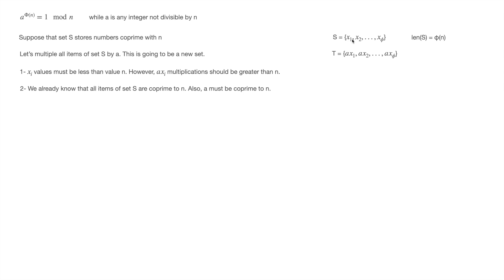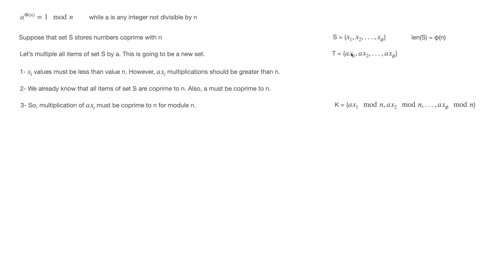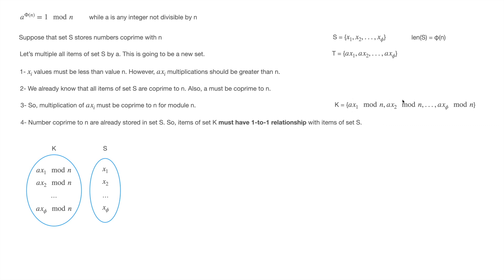The x values in set S are less than n since we stored positive integers up to n there, but a times x values might be greater than n. We already know all items in set S are co-prime to n, and a must also be co-prime to n by definition of Euler's theorem. So if I find the mod n value for each a·xᵢ, I get values co-prime to n. I store these in set K: the elements are a·x₁ mod n, a·x₂ mod n, and a·x₃ mod n. All items in set K must be co-prime to n.